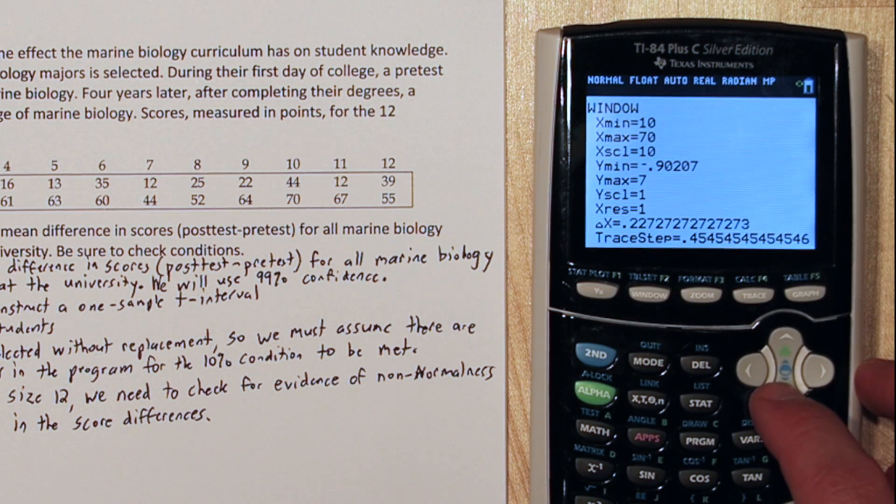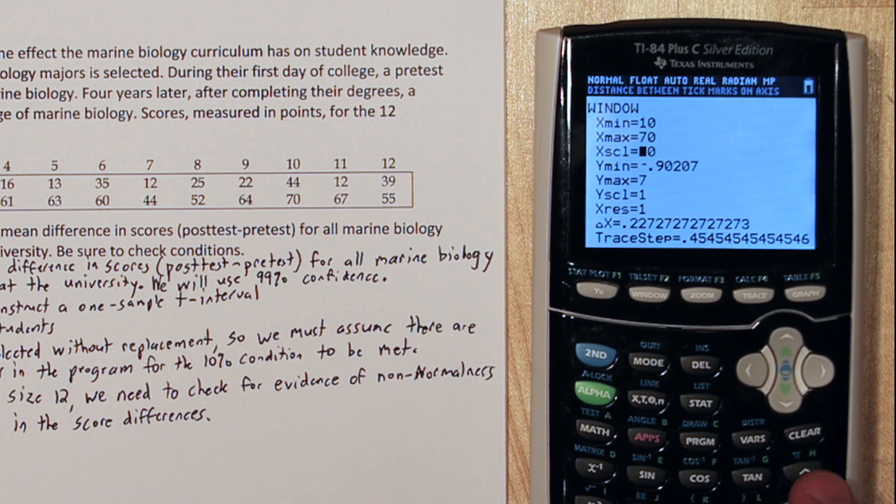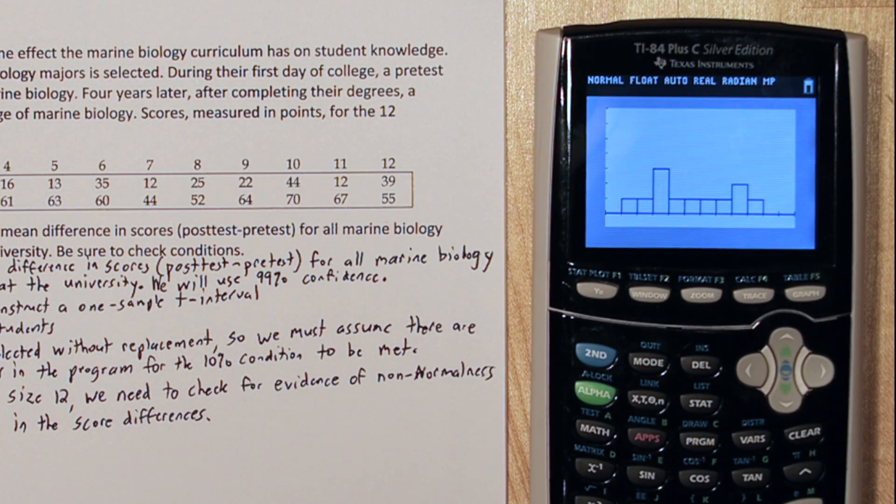Let's try a different window setting, just to be sure. Let's change the x scale to 5. Okay, I still don't see strong skewness. So, we checked a few different histograms. It looks okay. They're certainly not strong skewness.